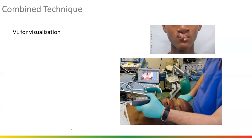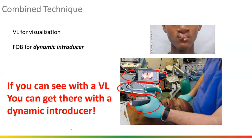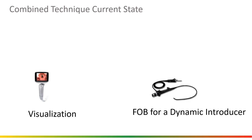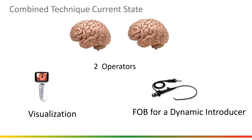When we use those tools together, we call this a combined technique. VL for visualization, fiber optic bronchoscope for dynamic access. All the papers and studies show that if you can see with a video laryngoscope and you're using a dynamic introducer, you can easily access the trachea. But there are limitations — it takes two providers, so you have to coordinate two brains. That takes mental task load and can be clunky. That's one of the limitations of this technique in its current state.